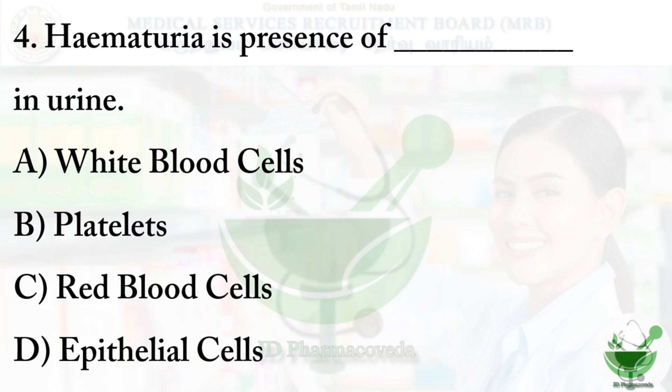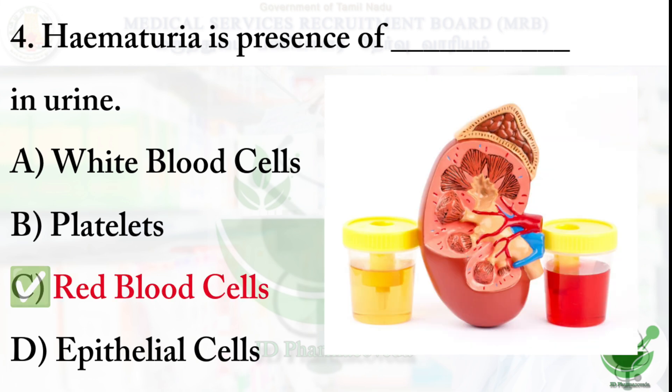Question number four: hematuria is the presence of what in urine? Option A: white blood cells, option B: platelets, option C: red blood cells, option D: epithelial cells. The correct option is option C, red blood cells. When red blood cells are found in urine, the condition is called hematuria.